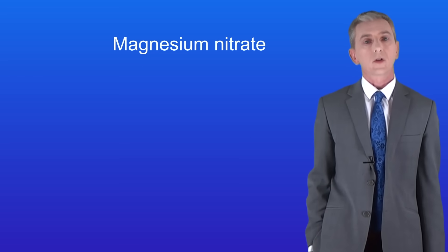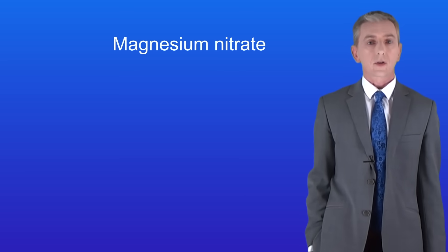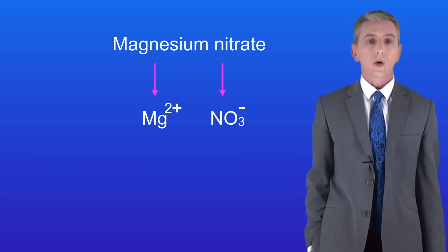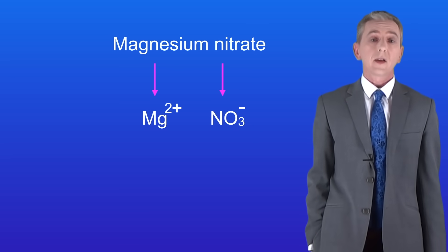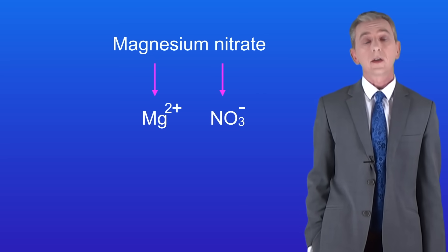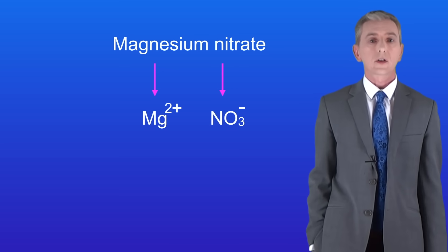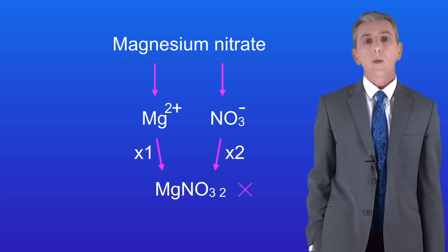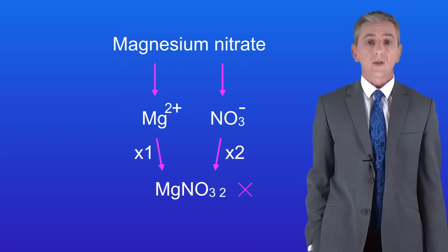Here's a final example for you to try: magnesium nitrate. The magnesium ion has a 2+ charge and the nitrate ion has a 1- charge. Pause the video now and work out the formula. Because the magnesium ion has a 2+ charge, we need two nitrate ions to cancel this out. However, we cannot simply write a 2 next to the nitrate ion, as this would mean we've got 32 atoms of oxygen, which is clearly wrong. So in this case, again, we need to use brackets, giving Mg(NO3)2.